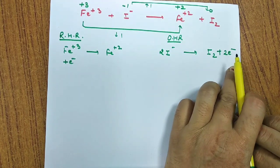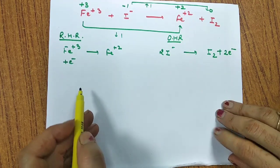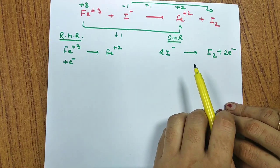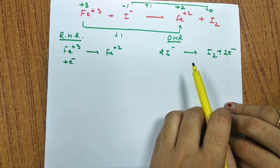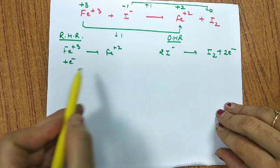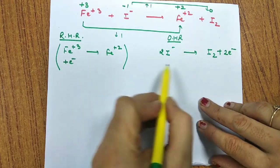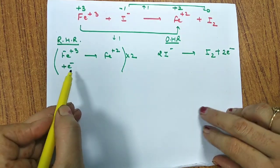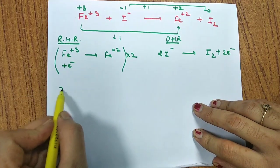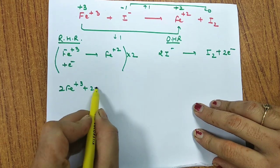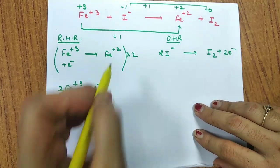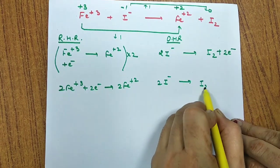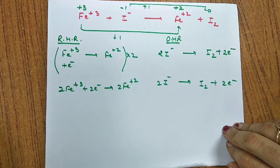Since there is no oxygen and no hydrogen in these half reactions, we move directly to equating the electrons. The reduction half reaction has 1 electron and the oxidation half reaction has 2 electrons. So we multiply the reduction half reaction by 2, giving: 2Fe³⁺ + 2e⁻ → 2Fe²⁺, and the oxidation half reaction: 2I⁻ → I₂ + 2e⁻.